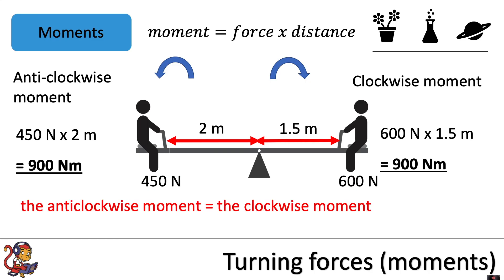We can conclude that the anti-clockwise moment equals the clockwise moment. The seesaw is in equilibrium and is balanced. There won't be movement up or down on either side because the moments are the same—the seesaw will stay in the same position and remain balanced.